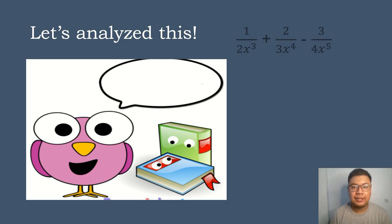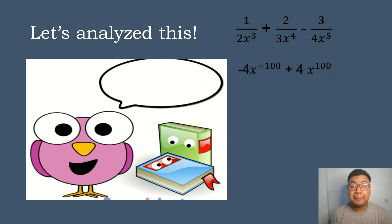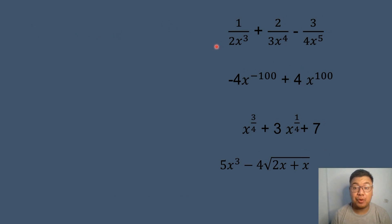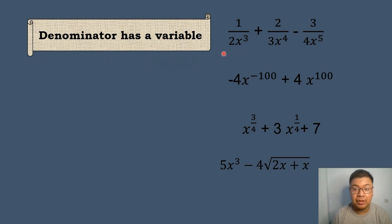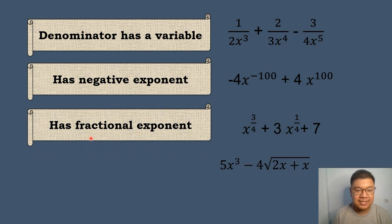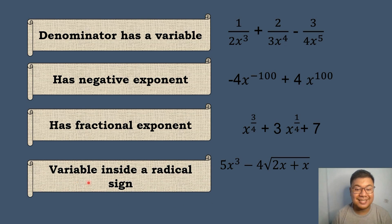Let's analyze the activity. These expressions are all not polynomial. Why are they not polynomials? The first example is not a polynomial because the denominator has a variable — we have 2x cubed, 3x to the fourth power, and 4x to the fifth power as the denominator. The second one has a negative exponent: negative 100 power. The third one has a fractional exponent: raised to 3/4 power and 1/4 power. And the last example, the variable is inside a radical sign — square root of 2x plus x.